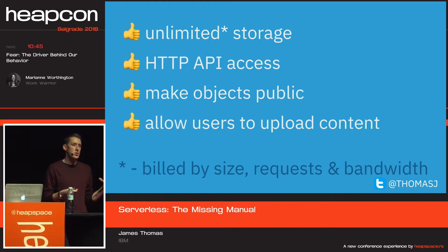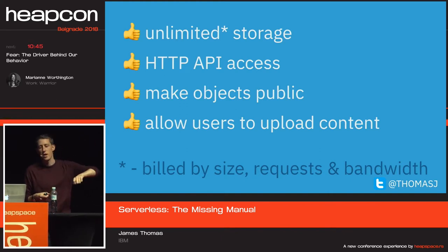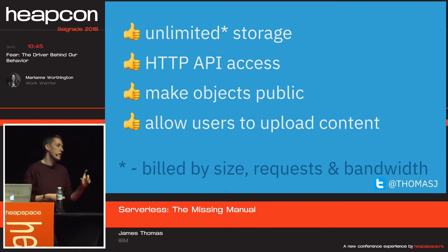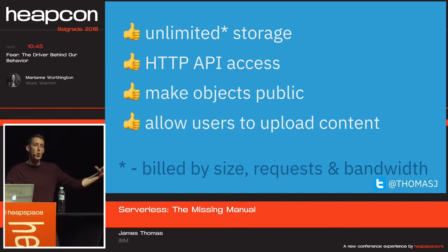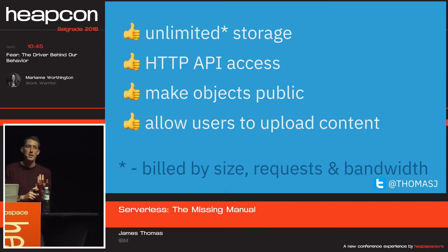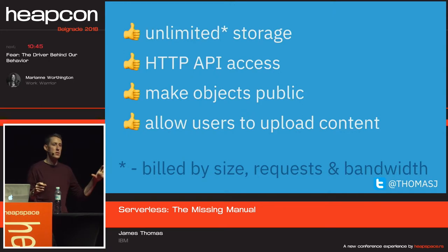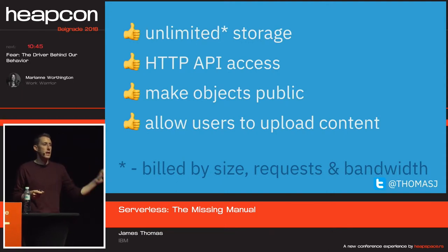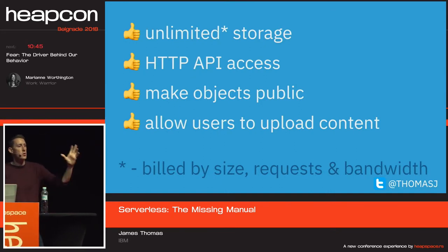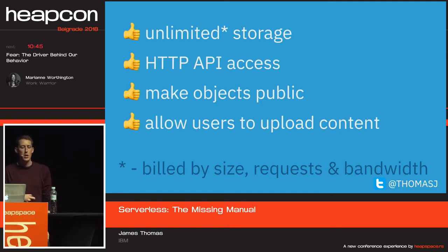Another difference about object stores is how you access files. With object stores, files are available over a normal HTTP interface — you can GET, PUT, and POST to interact with them. With traditional storage, you'd call something like 'read file' going through the kernel to a block device. With object stores you just use a normal HTTP interface, and the cloud provider gives you a nice client library. Because files are available over HTTP, you can make them public — clients can access JavaScript, CSS, and HTML directly without calling your serverless function, which is faster and cheaper.